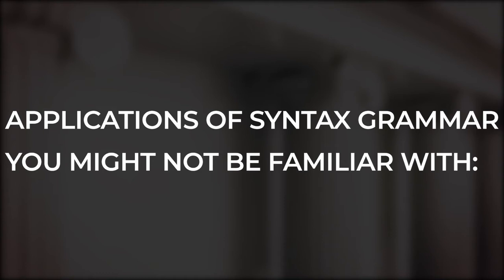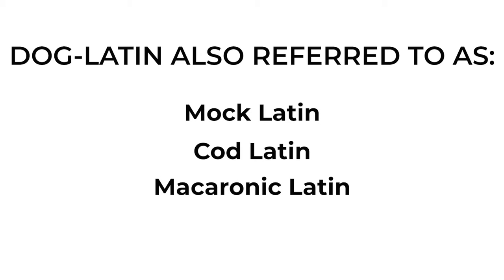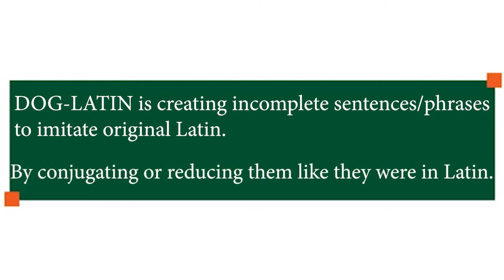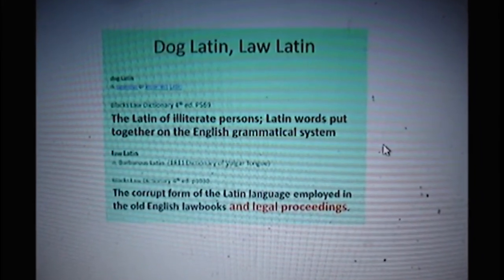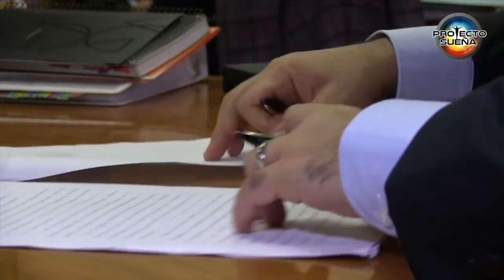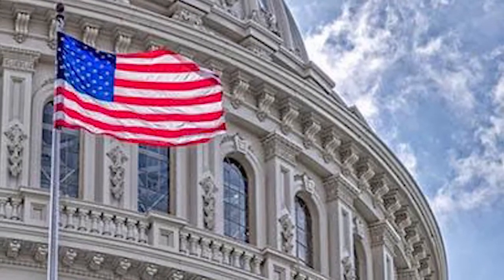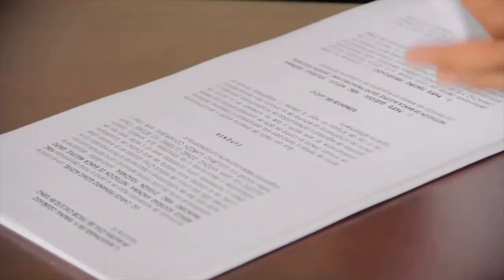Dog Latin is also referred to by names like Mock Latin, Cod Latin, or Macaronic Latin. According to Wikipedia, Dog Latin is the art of creating incomplete sentences or phrases to imitate original Latin by transposing words in other languages into Latin, either by conjugating or reducing them as if they were in Latin. Dog Latin has no connection with either Latin or English. Why do we have documents in court and some government letters written in Dog Latin? Due to a lack of understanding of these languages, many have been deceived by corporate bodies like banks, courts, and even the government. Although most rules and regulations were written with incorrect grammar, the Western governing systems have been deceiving citizens in ways they could never imagine.